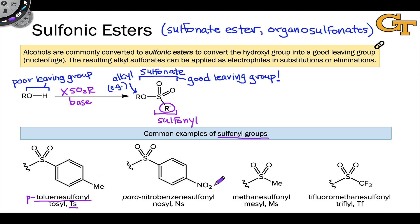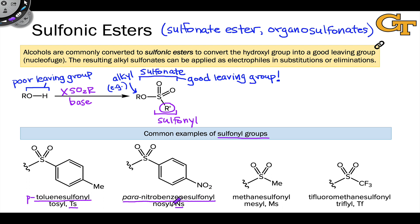When the para group is not a methyl but a nitro group, we move to the nosyl sulfonyl group, abbreviated Ns. This is a particularly electron-poor sulfonyl group due to the electron-withdrawing effect of the NO₂ group — that's para-nitrobenzene sulfonyl, or para-nitrobenzene sulfonate if connected to an oxygen, or nosyl for the sulfonyl group, or nosylate for the sulfonate.